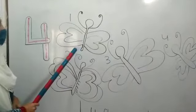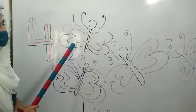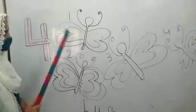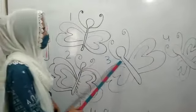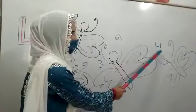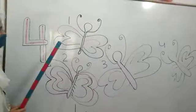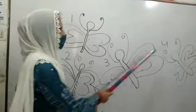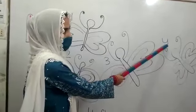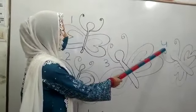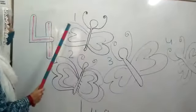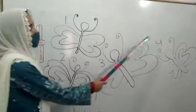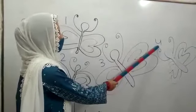Dear students, look at the board. How many butterflies? 1, 2, 3, 4. How many butterflies? 1, 2, 3, 4. How many butterflies? 4 butterflies. Once again, 1, 2, 3, 4. 4 butterflies.